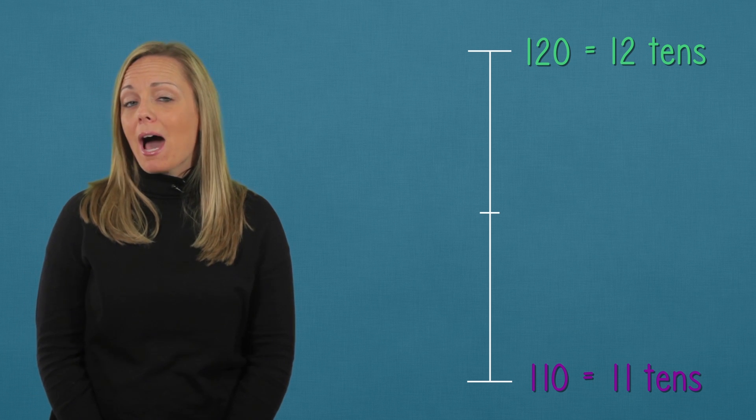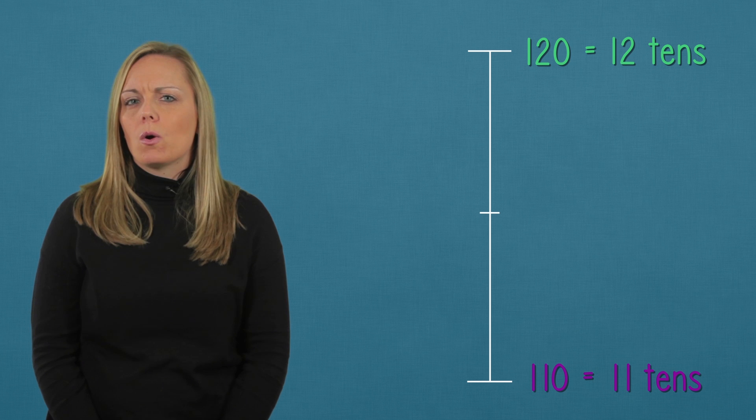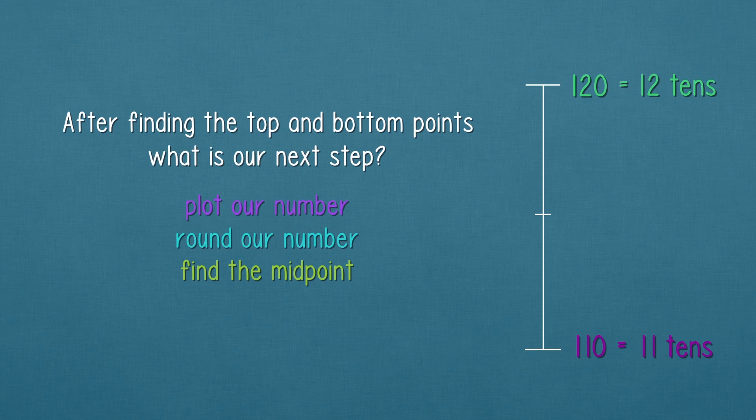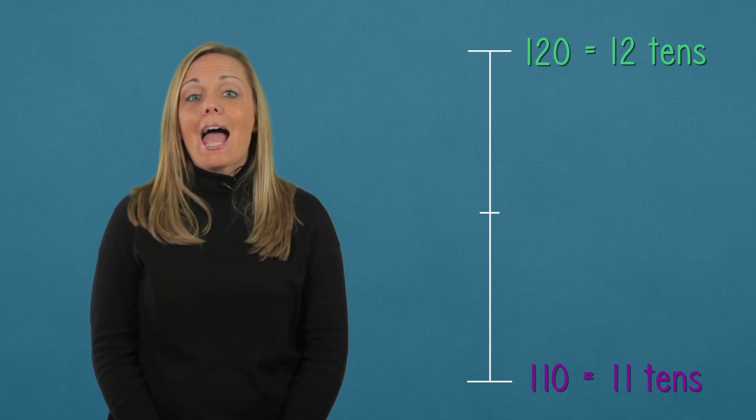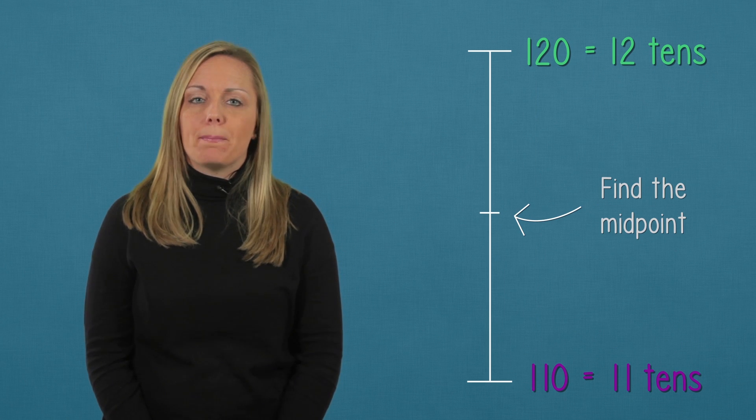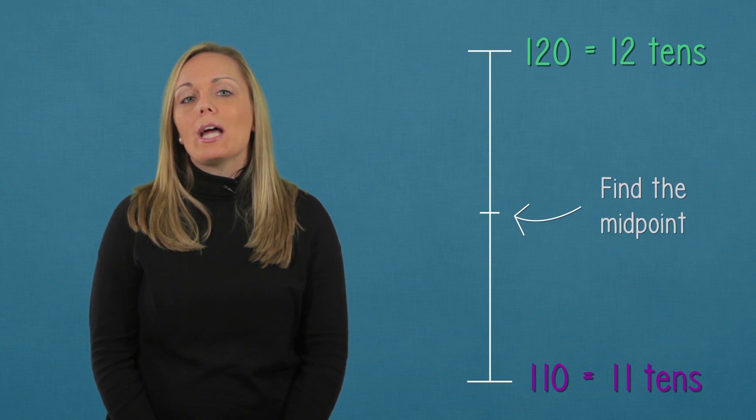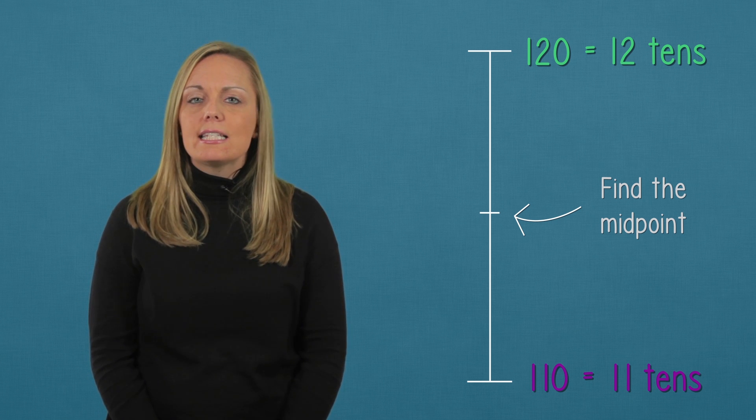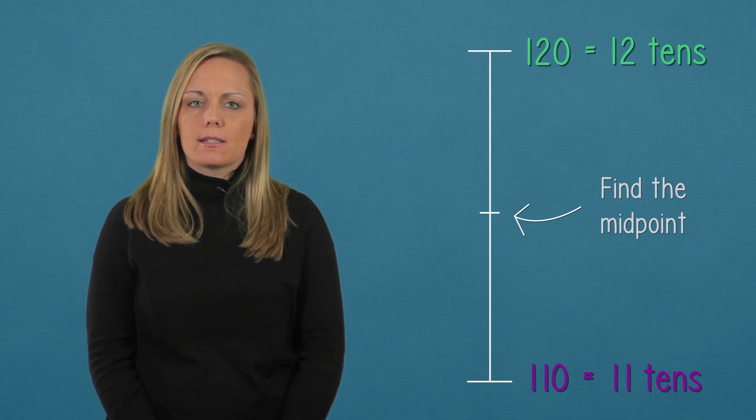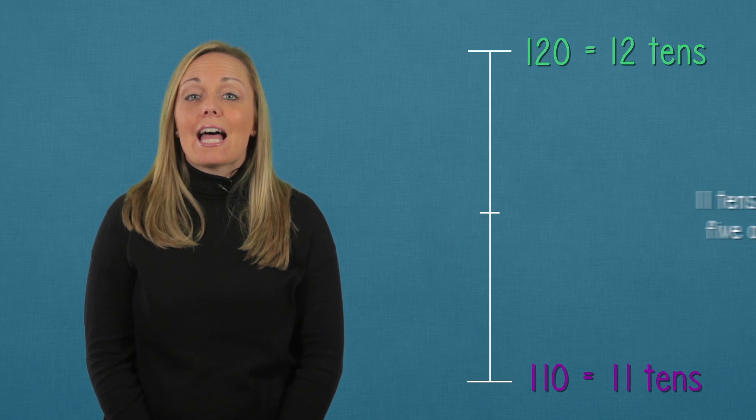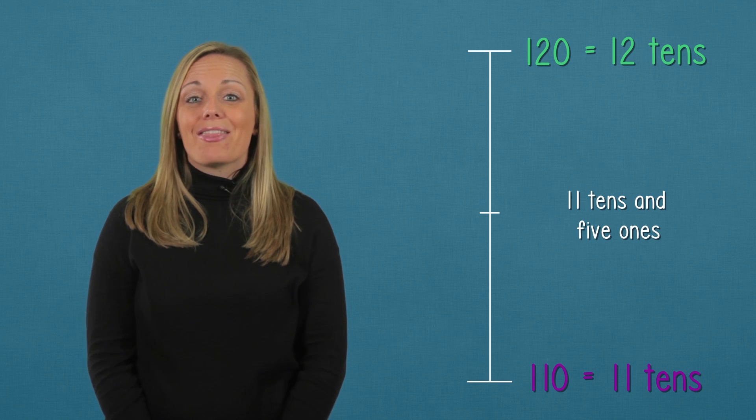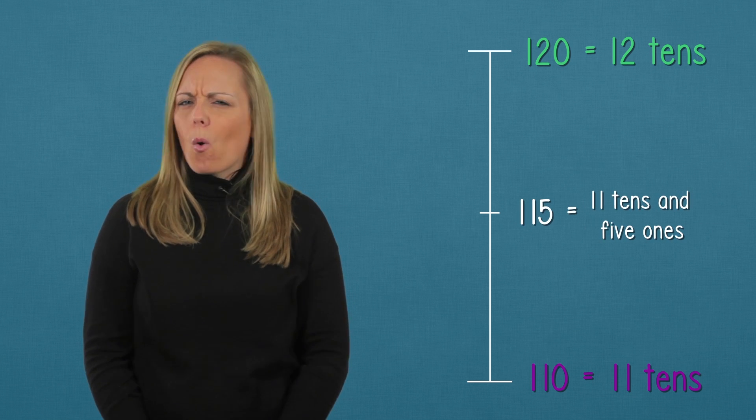Now that we have the bottom and the top marks, what is our next step? Our next step is to find the midpoint. Let's find what is between eleven tens and twelve tens. The midpoint is eleven tens and five ones. That's one hundred fifteen. Awesome!